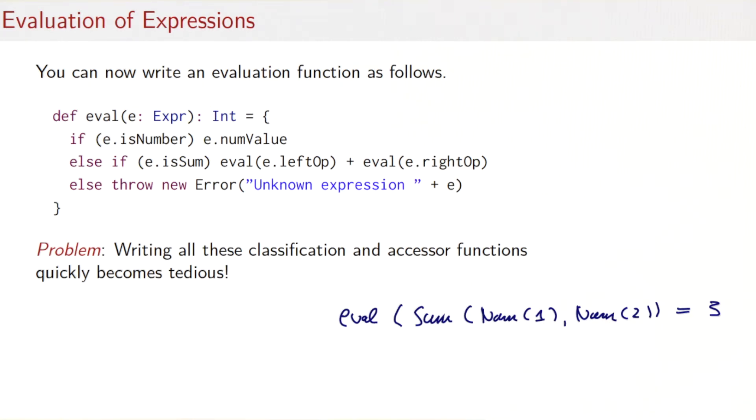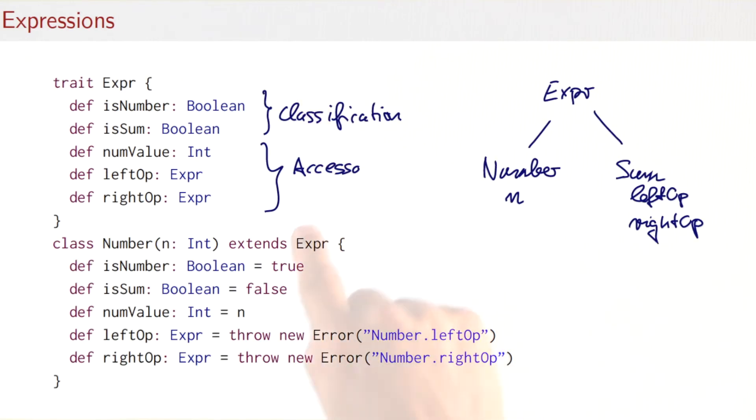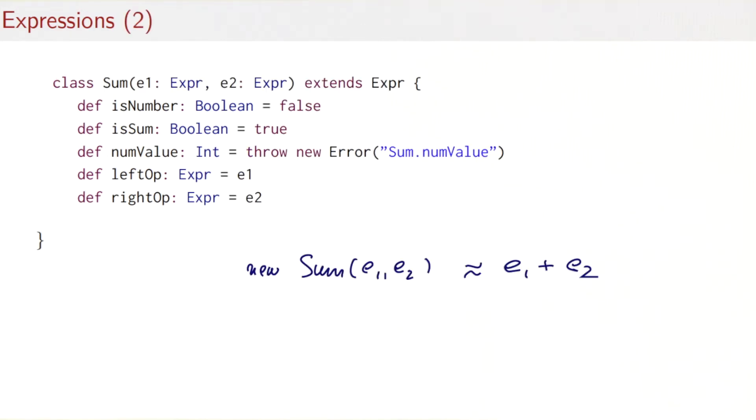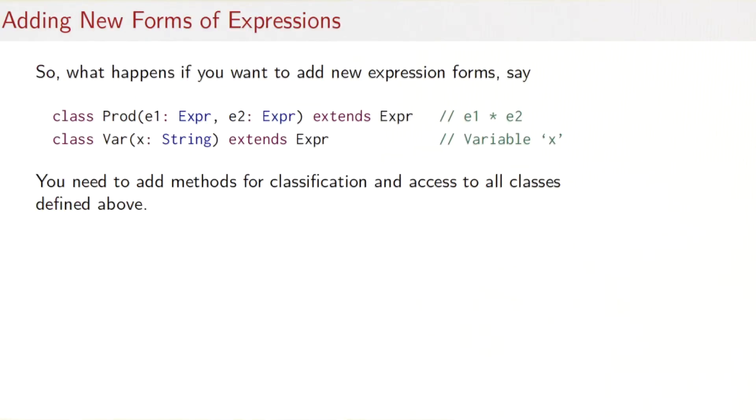Okay, so far so good. But there's a problem with that and that is that writing all these classification and accessor functions quickly becomes tedious. We've already written 15 method definitions only to do something as simple as expressions consisting of sums and numbers. And things get worse if we add other forms of expressions.